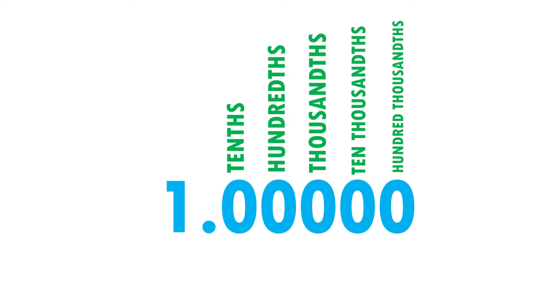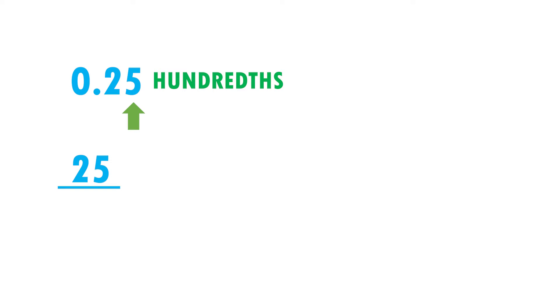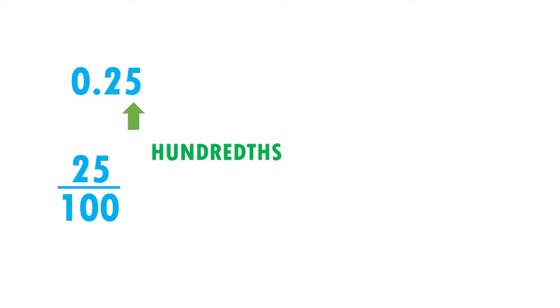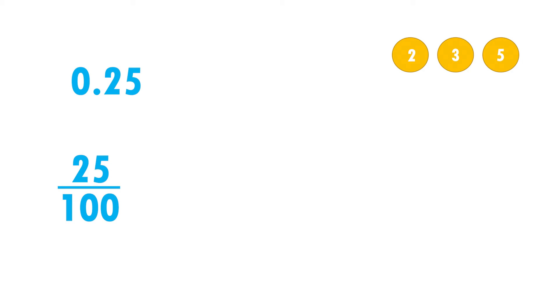Now that we know that, it will be very easy to review this topic. Let's go with the first example. Here I have 0.25, and the digits are in the tenths and hundredths positions, so in the numerator I put 25 without a decimal point, and in the denominator I put 100 because we are talking about hundredths.